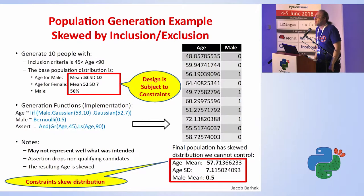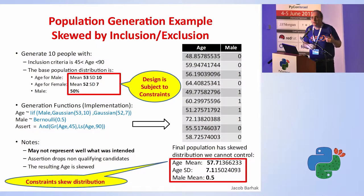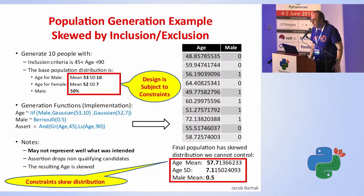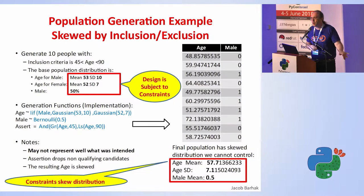There are two phenomena happening here. One is that this is generated using Monte Carlo techniques — I run random numbers and get random synthetic people. Since it's a random process, there's some randomness and standard deviation in the process itself, so it won't always give me exactly what I want. The second thing: I also added an inclusion criterion — age must be between 45 and 90. Whenever the system generated a person below age 45, it dropped them from the table. If you drop only the low ages, you're left with higher ages, and the distribution gets skewed.